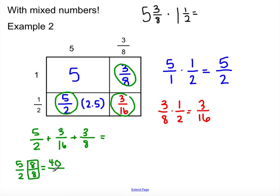And then 16, and I'm going to change this one as well. So, 3 over 8 inside my giant 1 is a 2. So, 3 times 2 is 6 over 16.